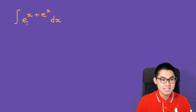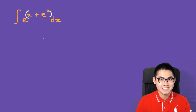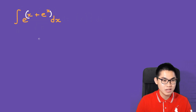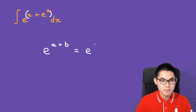The integral of e to the power of x plus e to the power of x. In order to solve this, we need to simplify this first. There's a rule that says if we have e to the power of a plus b, then this is the same as e to the power of a times e to the power of b. So let's go ahead and do that.